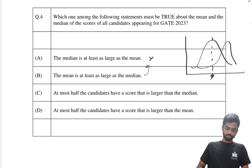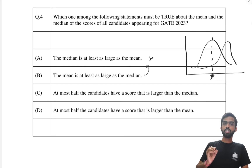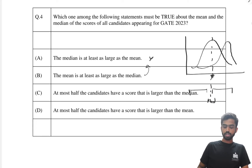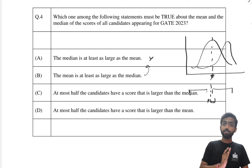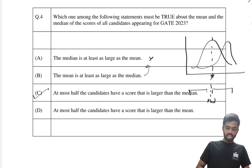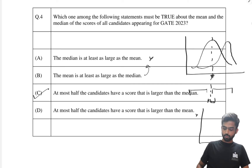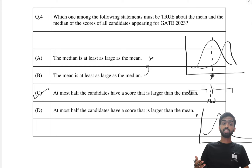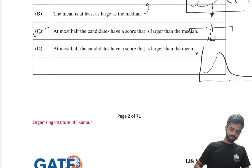Looking at the third statement: 'at most half of the candidates have a score larger than the median.' By definition of median, exactly half the data lies above and half below. So this is always true. The fourth statement — 'at most half have a score larger than the mean' — cannot be guaranteed, because in a skewed distribution with a long tail, more than half the candidates can score either above or below the mean. The correct answer is the third statement.